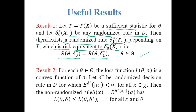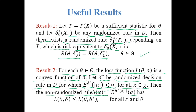Result 2: for each theta in parameter space capital theta, suppose the loss function L(theta, A) is a convex function of A. Let delta-star be a randomized decision rule in the given class D for which the expected value of the absolute value of A is finite. For each x in chi, the non-randomized decision rule delta(x) defined as the expected value of A with respect to delta-star has loss L(theta, delta) less than or equal to L(theta, delta-star) for all x and all theta. This means that if our loss function is convex, we must restrict attention to the class of non-randomized decision rules.